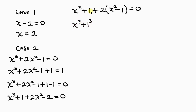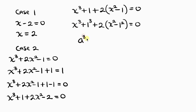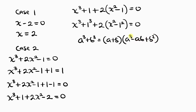Looking at the first part, x³ + 1 can be written as x³ + 1³ since 1³ = 1. This is a sum of two cubes. The second part, 2x² - 2, factors as 2(x² - 1²), which is a difference of two squares. The property of sum of two cubes is a³ + b³ = (a + b)(a² - ab + b²), and difference of two squares is a² - b² = (a + b)(a - b).